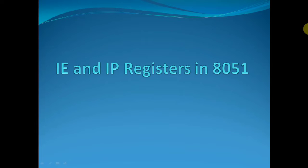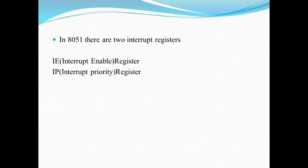Hello and welcome to the video lecture on IE and IP registers in the 8051 microcontroller. In 8051 there are two interrupt registers, which are also called special function registers for interrupts. The first register is called the IE register — the Interrupt Enable register — and the second is called the IP register, which is the Interrupt Priority register.